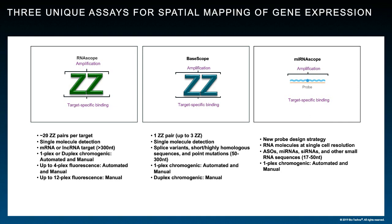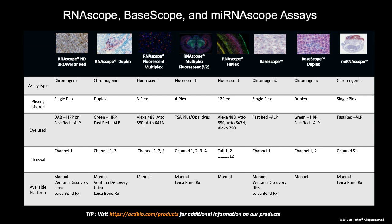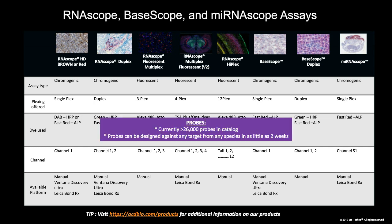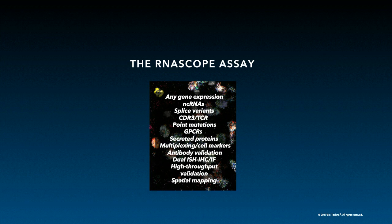We have over 26,000 catalog probes already designed. If we don't have a probe for your target, we can design one in less than two weeks. I'm going to give an example of each assay — the RNAscope, BaseScope, and microRNAscope assays.